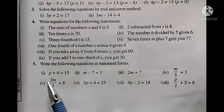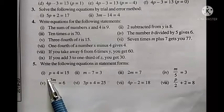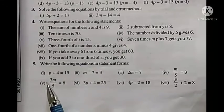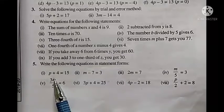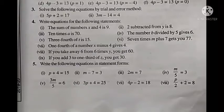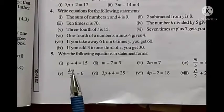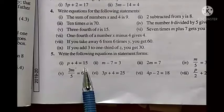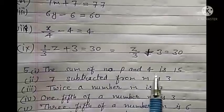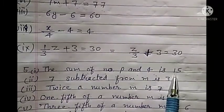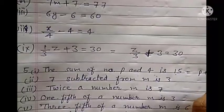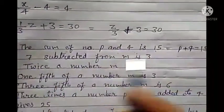First: p plus 4 equals to 15. This is very easy. The statement is: the sum of numbers p and 4 is 15.